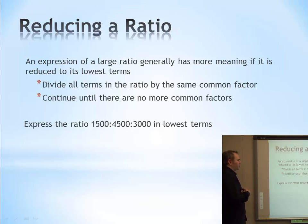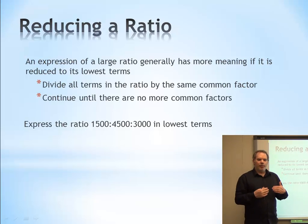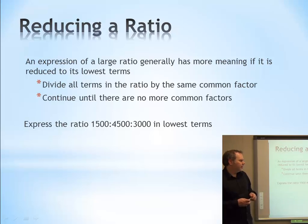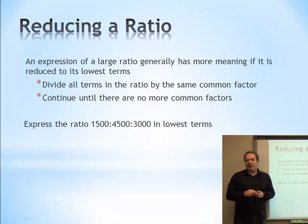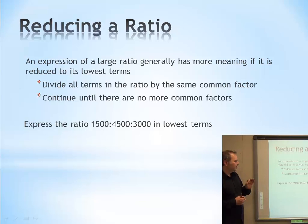So, what we're going to do is, first of all, we're going to reduce the ratio. Basically, to express a large ratio in more meaningful terms. We can have really large numbers that don't really mean a lot. When we shrink them down, we can see the relative sizes a lot better. So, we're going to reduce to the lowest terms. How do we do that? Well, we divide all the terms by the same common factor. Remember from high school, elementary school, common factors. Continue until there are no more common factors. We're going to find a common factor, divide all the terms by it. Find another common factor, divide all the terms by it. Find a third common factor, divide all the terms by it. Until we can't find any more common factors, we're then in the lowest terms.